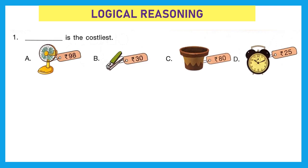Question 1: dash is the costliest. We have four options: A is fan which costs 98 rupees, B is clipper which costs 30 rupees, C is a pot which costs 80 rupees, and D is an alarm clock that costs 25 rupees. Costliest means the one with the higher value. The fan at 98 rupees is the greatest of all, so our correct answer is A, fan.